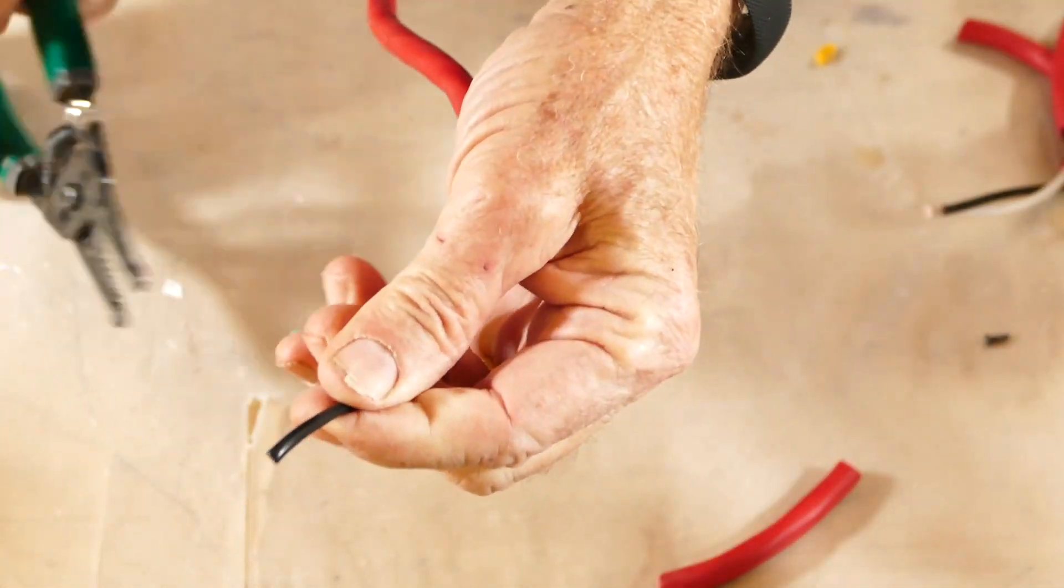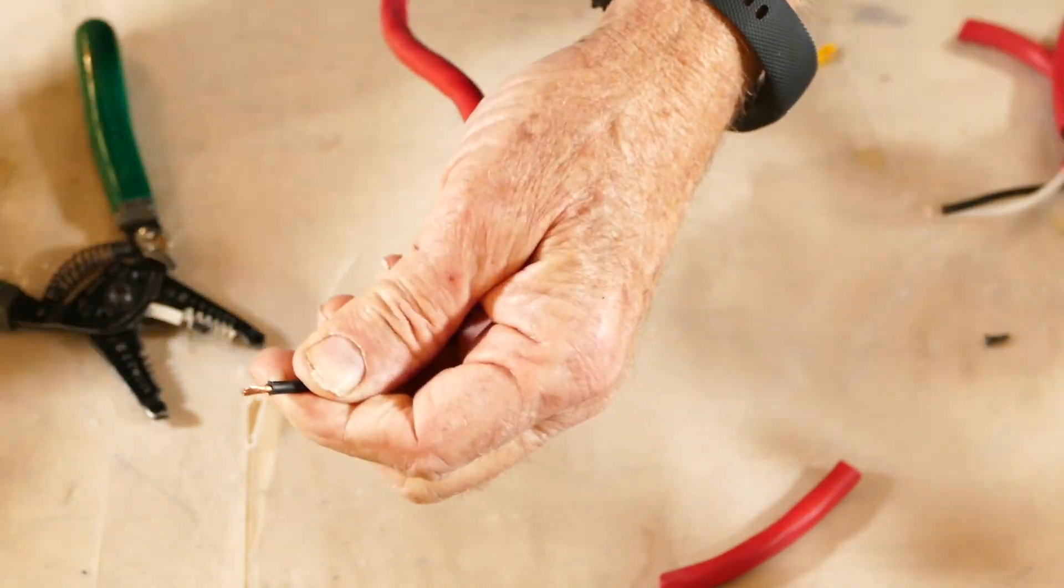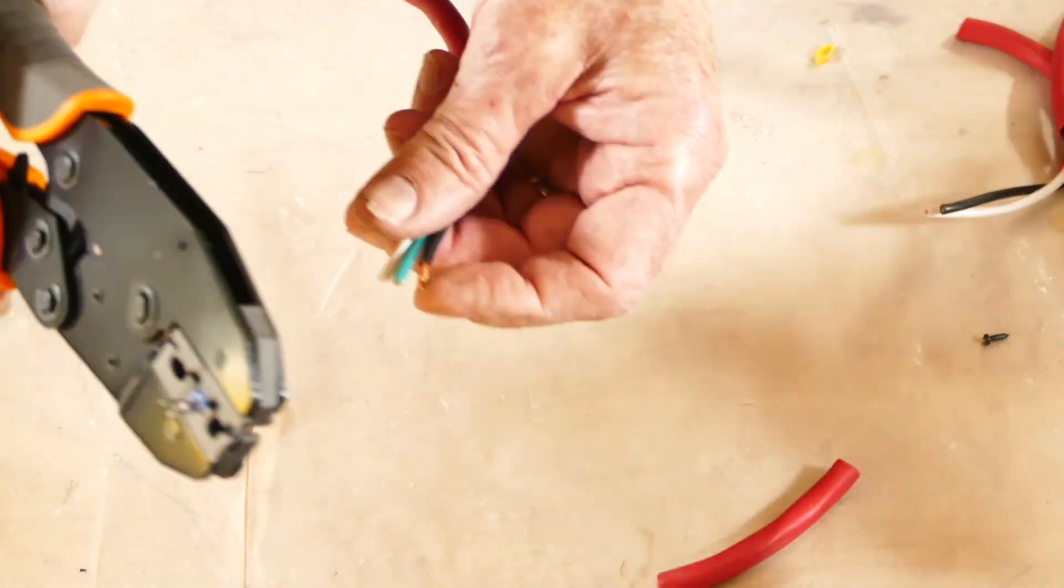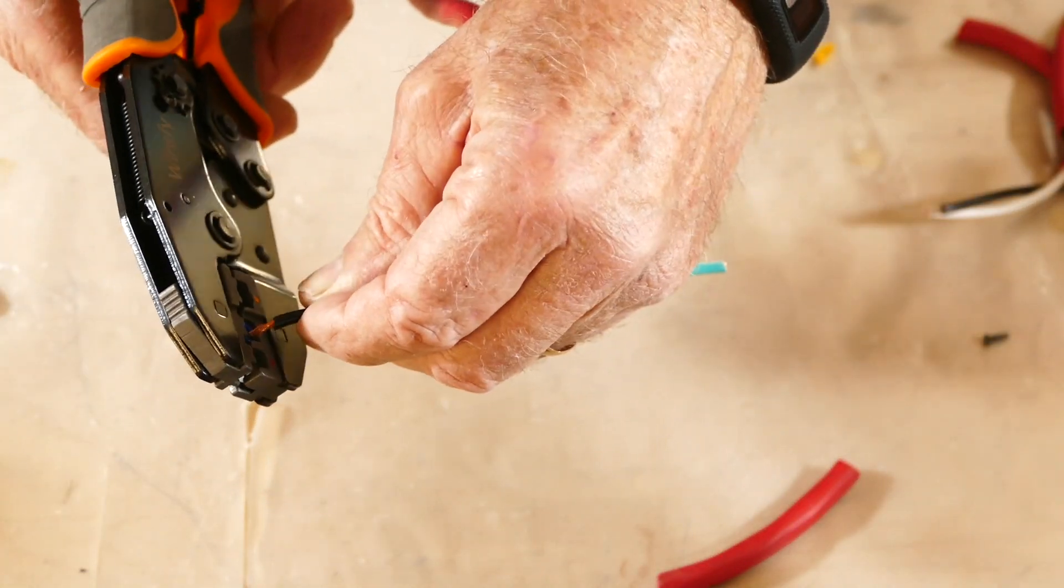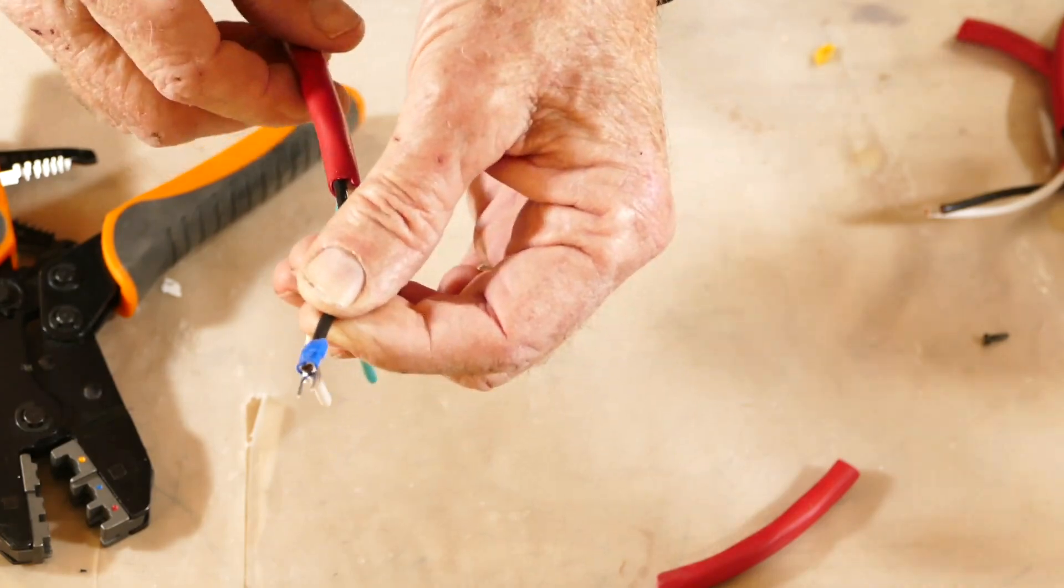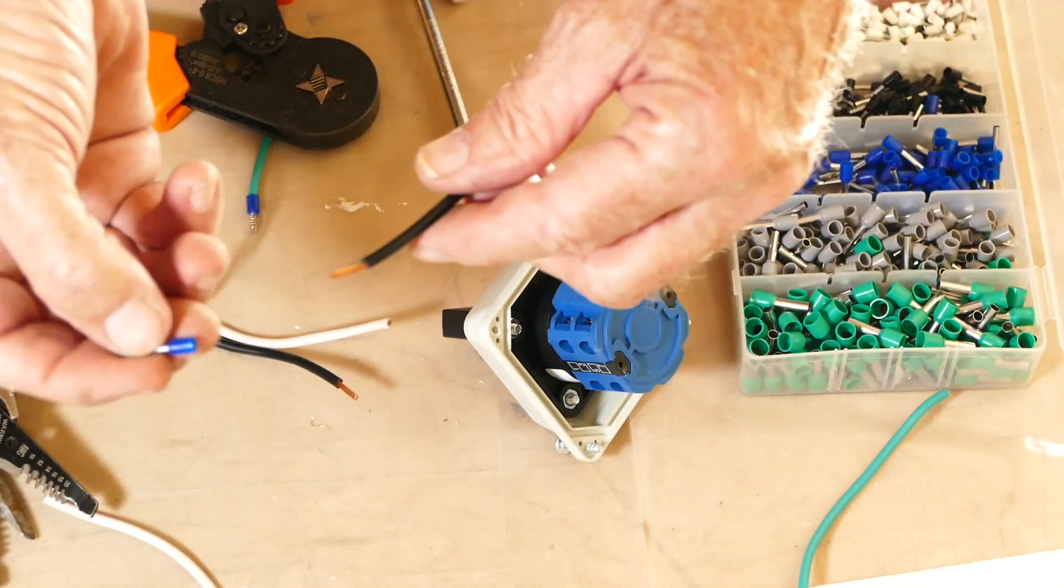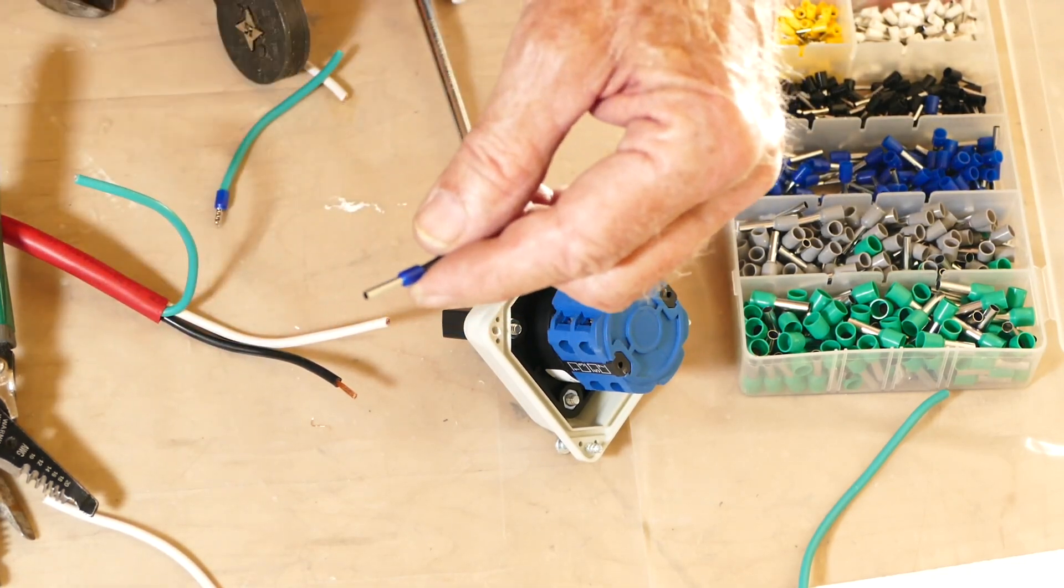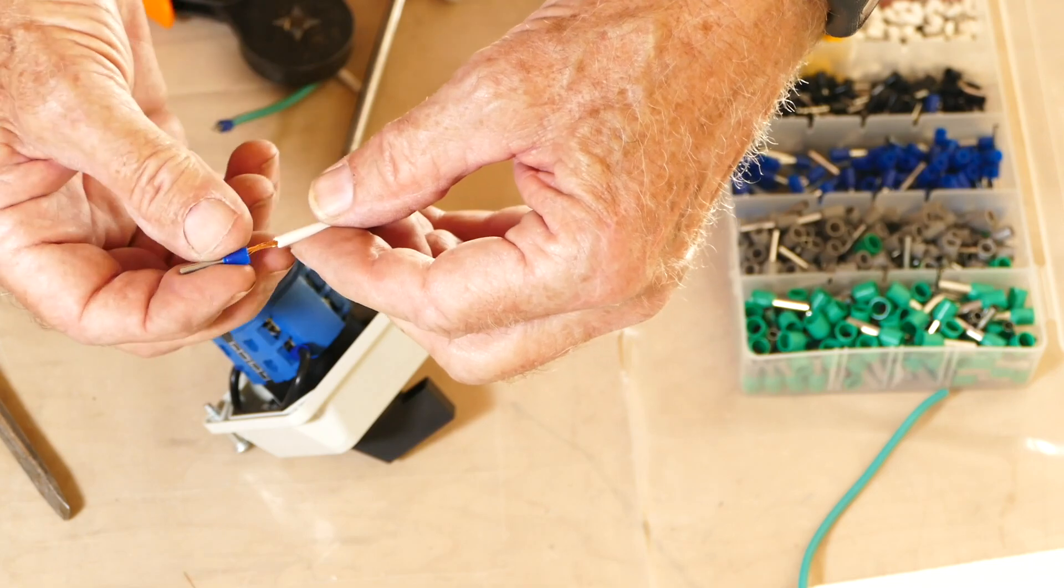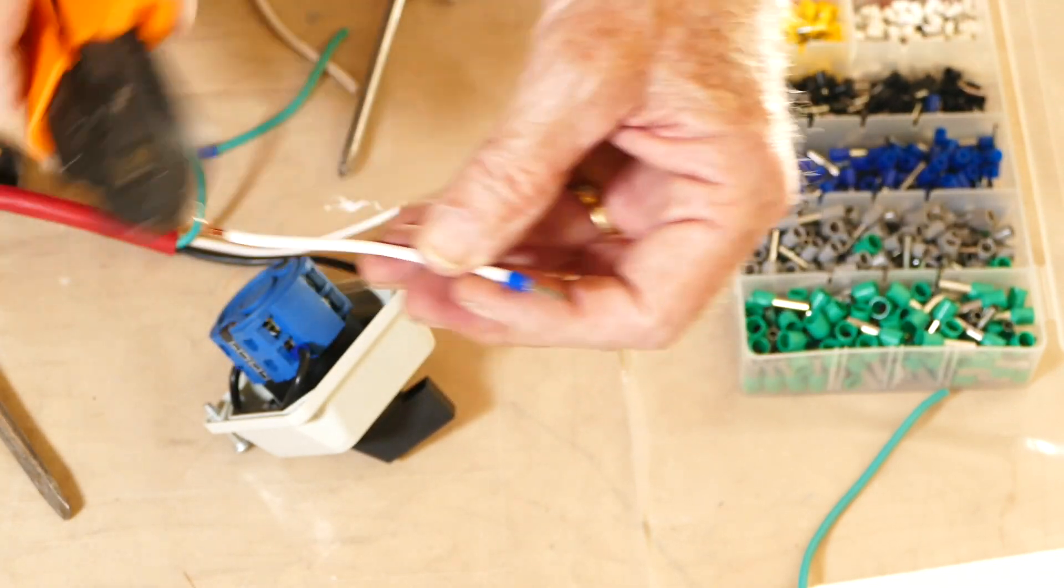Here's a 16 second tutorial on how to crimp a terminal and here's a quick tutorial on how to install a ferrule. Now I'm going to make and install the two jumpers we need between terminals two and four and terminals six and eight.